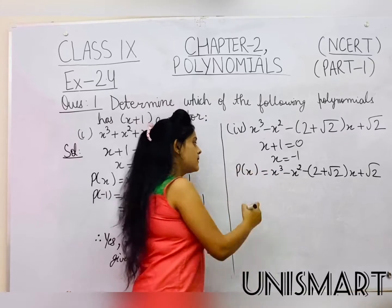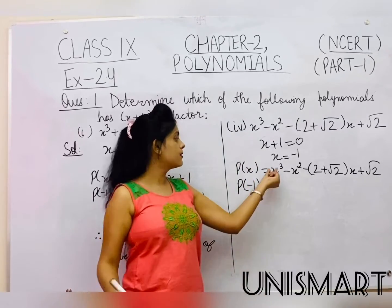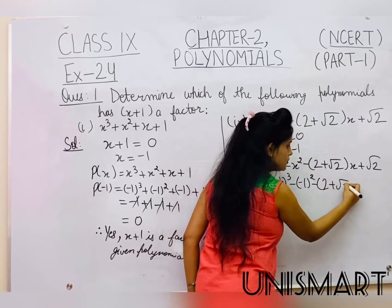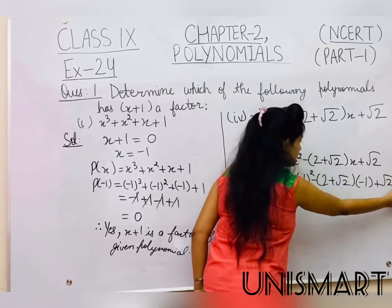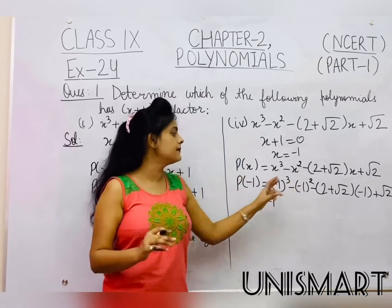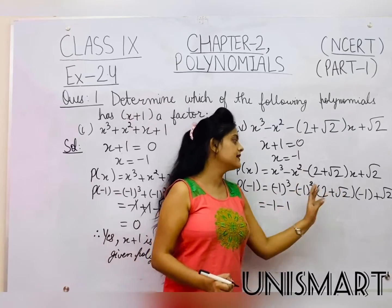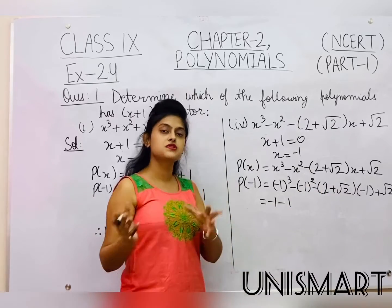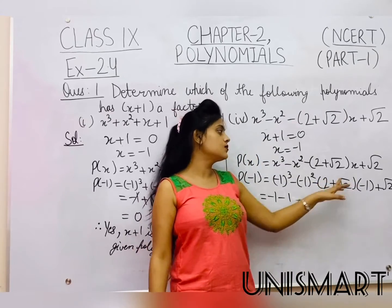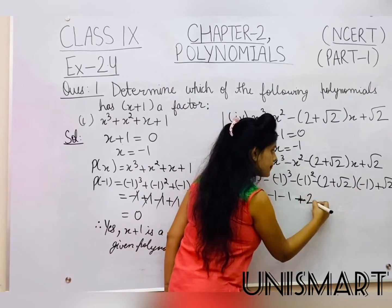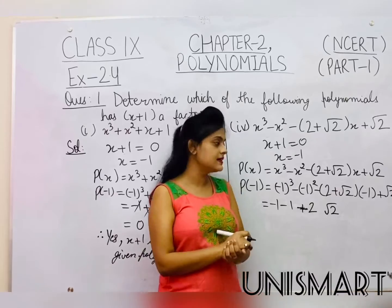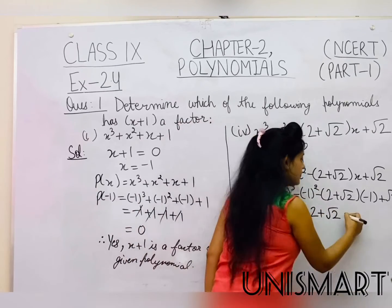Now we put x = -1 into the polynomial. Solving: (-1)³ = -1, (-1)² = 1 but with the minus sign it becomes -1. The bracket term: with the outside minus sign, the signs inside flip, so minus 2 into minus 1 gives plus 2, and plus √2 also flips to give plus √2. Then the last term: minus times minus gives plus √2.